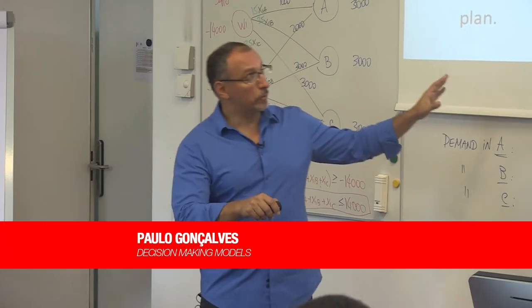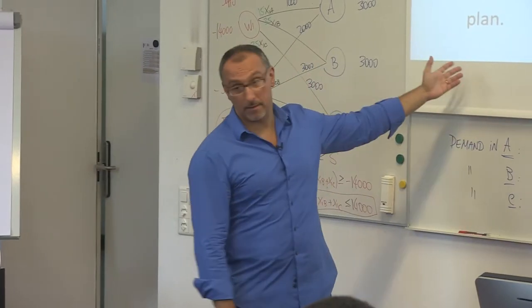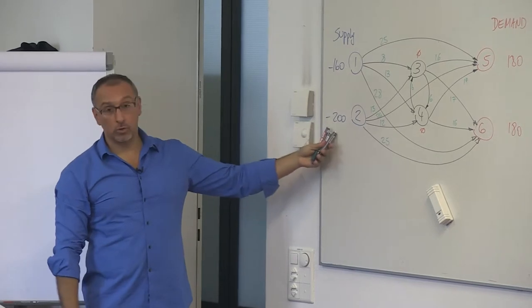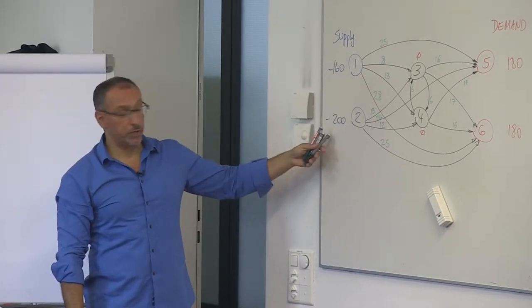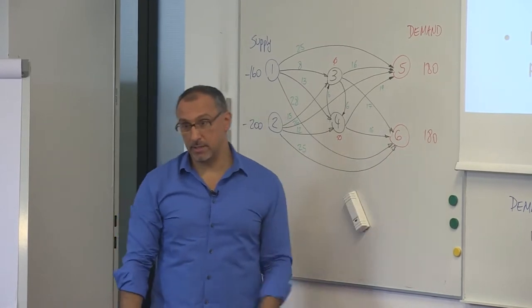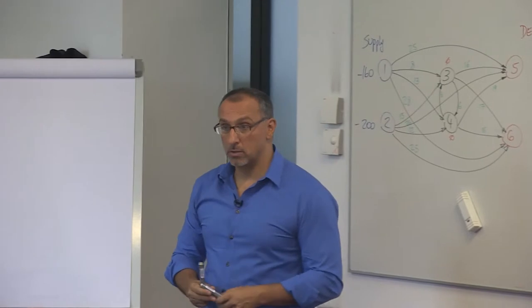Just like before, we would like to find the least expensive shipping plan, so we are again minimizing costs. We have total supply 360 equals total demand 360, so we know that the balance of flow in this system should be inflow minus outflow equals supply or demand.